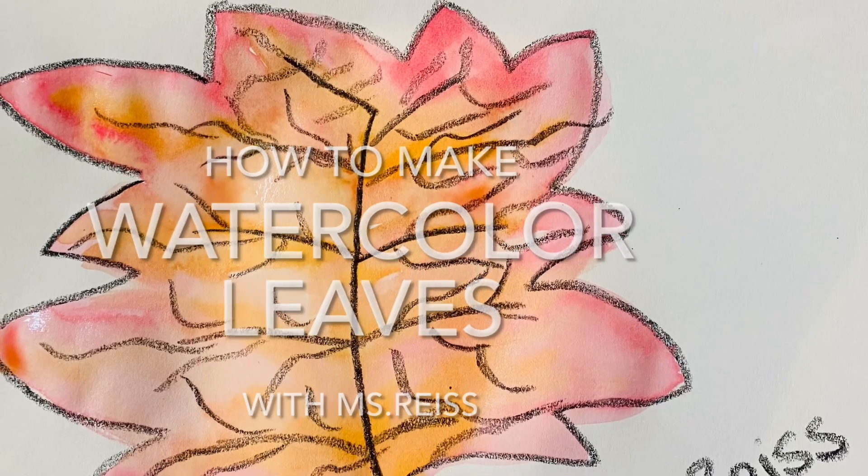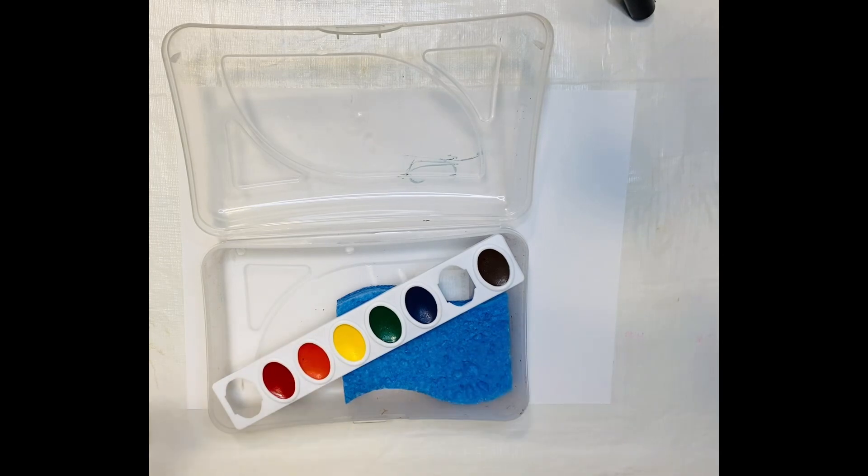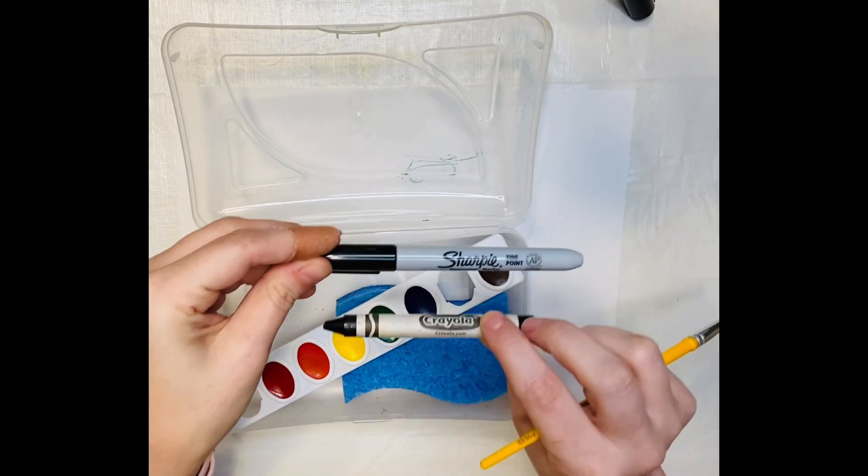How to make watercolor leaves with Miss Reese. Paint, sponge, paper, sharpie, crayons.